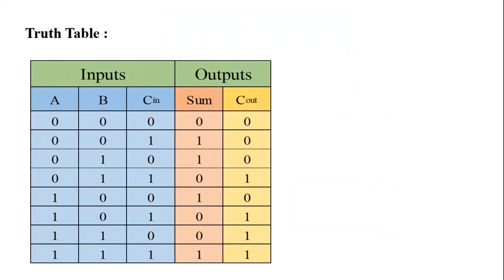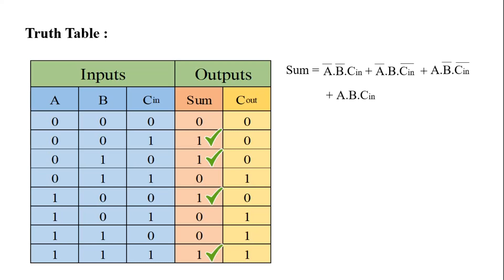This is the truth table of full adder. The expression of SUM and COUT can be directly written from the truth table in the SOP form. So SUM equals A bar dot B bar dot CIN, plus A bar dot B dot CIN, plus A dot B bar dot CIN, and after simplification we get A XOR B XOR CIN.